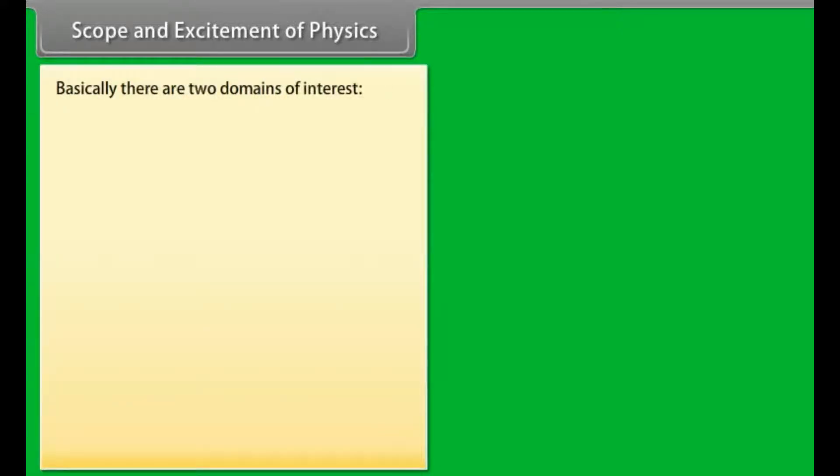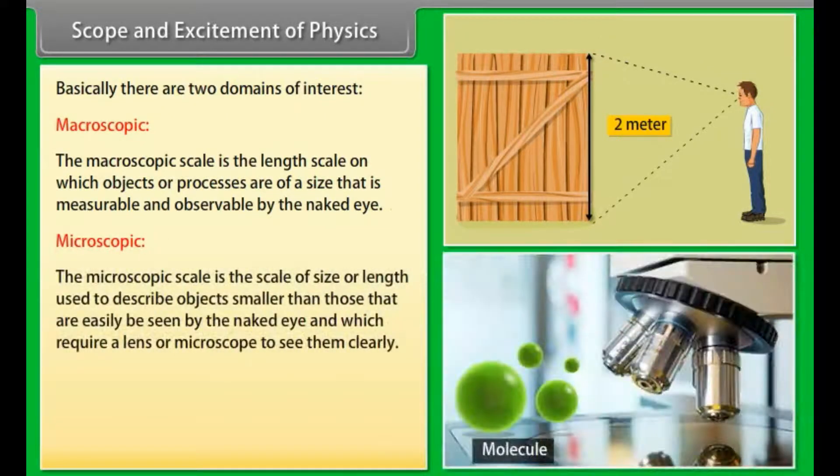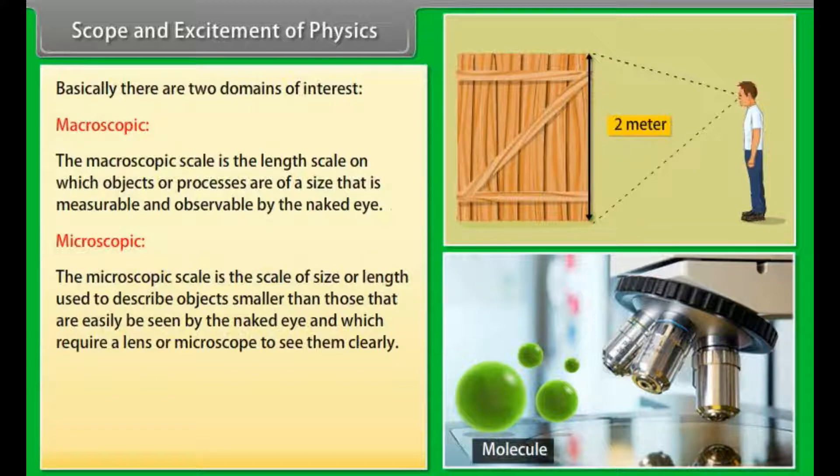Scope and excitement of physics. From a person beginning to work to communication over thousands of kilometers, physics has very wide scope. Basically, there are two domains of interest: macroscopic and microscopic. The macroscopic scale is the length scale on which objects or processes are of a size that is measurable and observable by the naked eye. The microscopic scale is the scale of size or length used to describe objects smaller than those that can easily be seen by the naked eye and which require a lens or microscope to see them clearly.